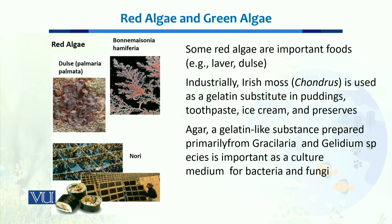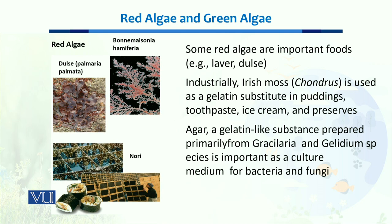Industrially, Irish moss is used as a gelatin substitute in different food items like puddings, toothpaste, ice cream, and different preservatives. Agar, which is a gelatin-like substance and an important part of bacterial media preparations, is also prepared from red algae. Overall, red algae make up an important source of economy in food and various other items.